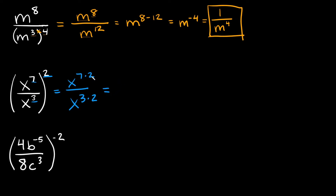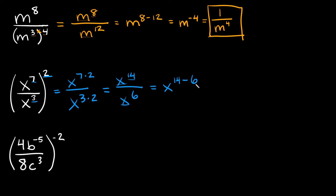Simplifying: 7 times 2 is 14, so on top we get x to the 14th. Then 3 times 2 is 6, so on the bottom we have x to the sixth. Now we divide — same base x, so we keep x and subtract the exponents: 14 minus 6 equals 8. So the answer is x to the eighth power.